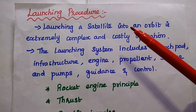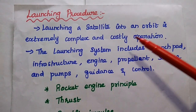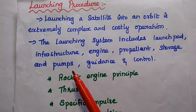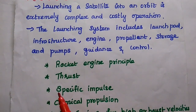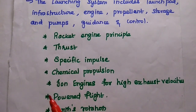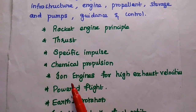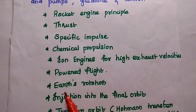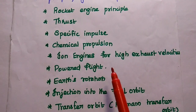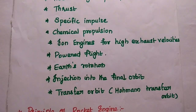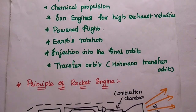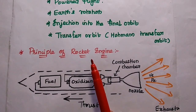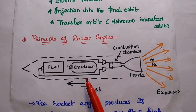Regarding the launching procedure, designing a satellite and launching it into an orbit is an extremely complex and costly operation. The launching system includes the launch pad, infrastructure, engine, propellant stage, storage, pumps, and guidance and control. Important functionalities include rocket engine principle, thrust, specific impulse, chemical propulsion, ion engines for high exhaust velocity, forward flight, earth rotation, injection into the final orbit, and the transfer orbit — that is, the Hohmann transfer orbit.